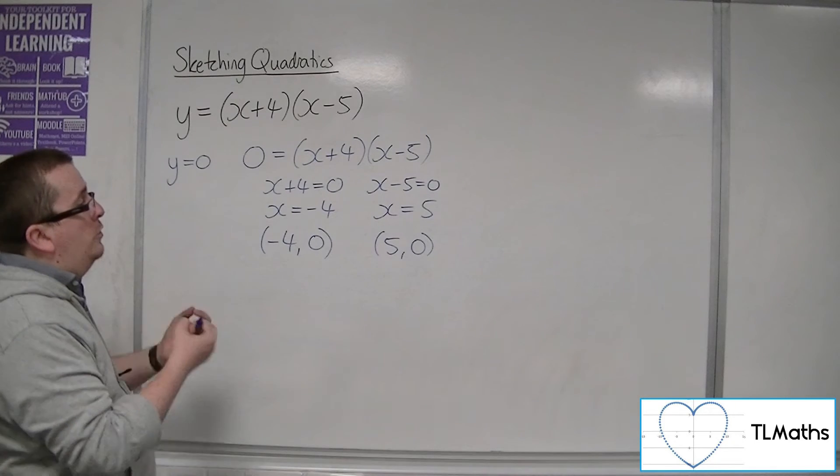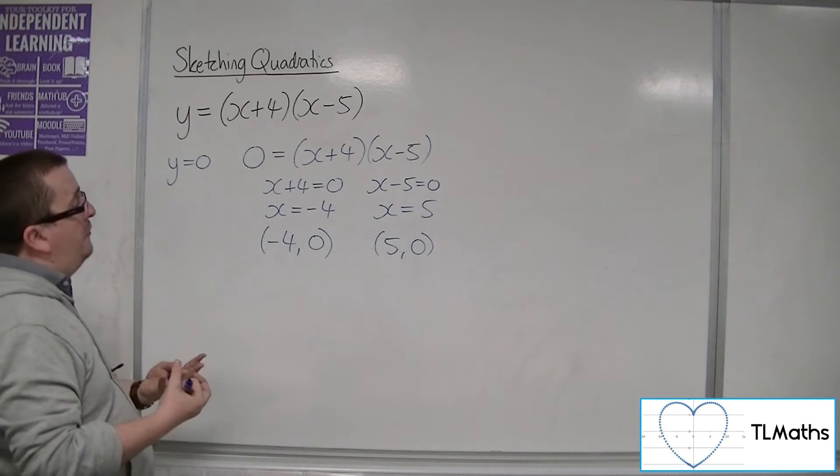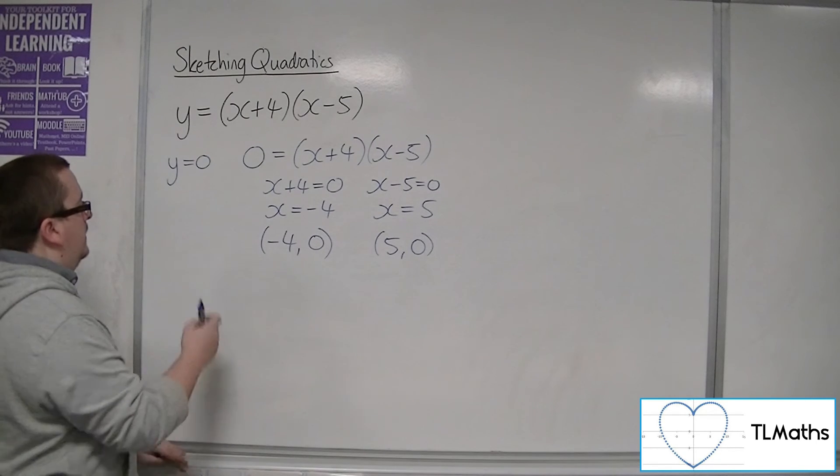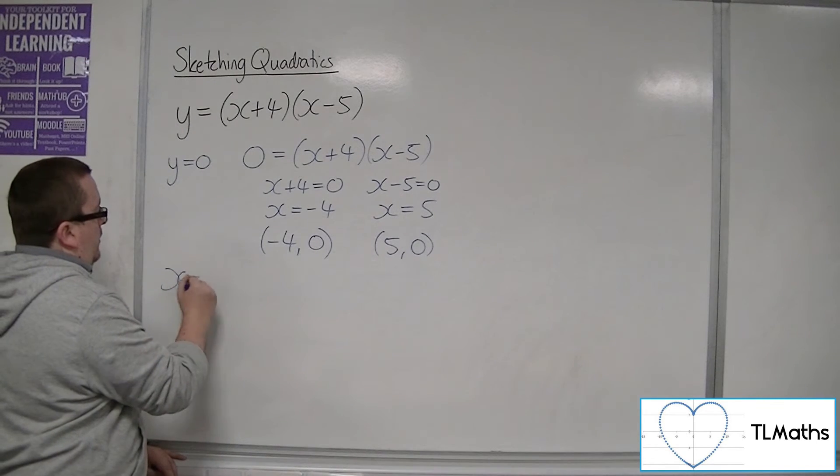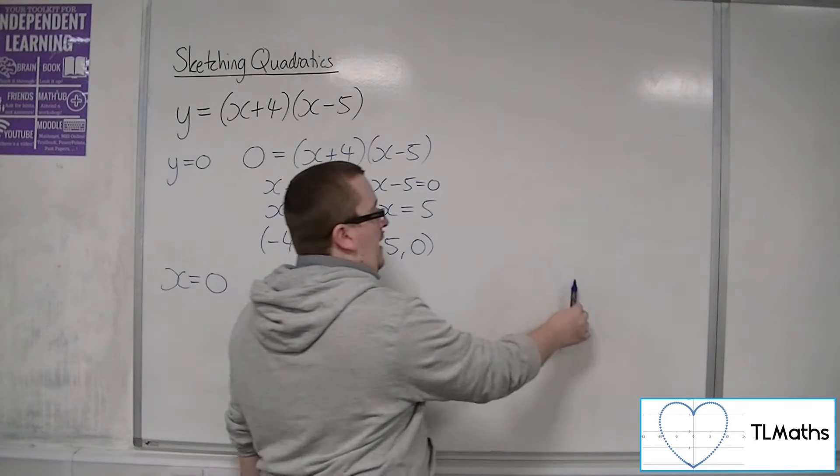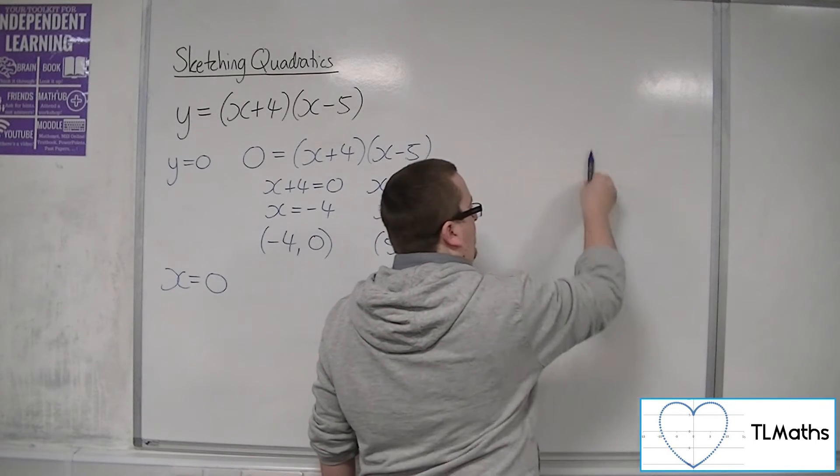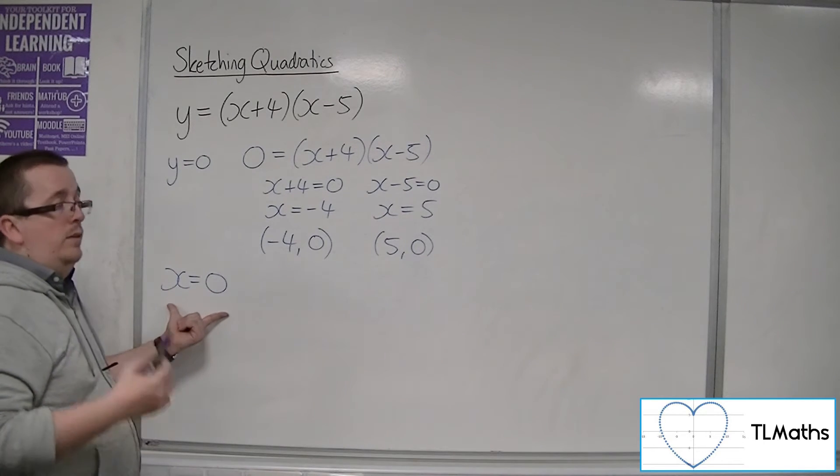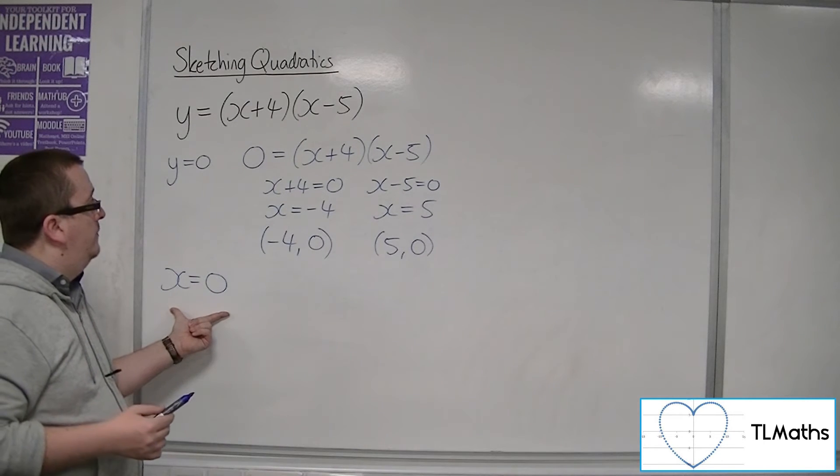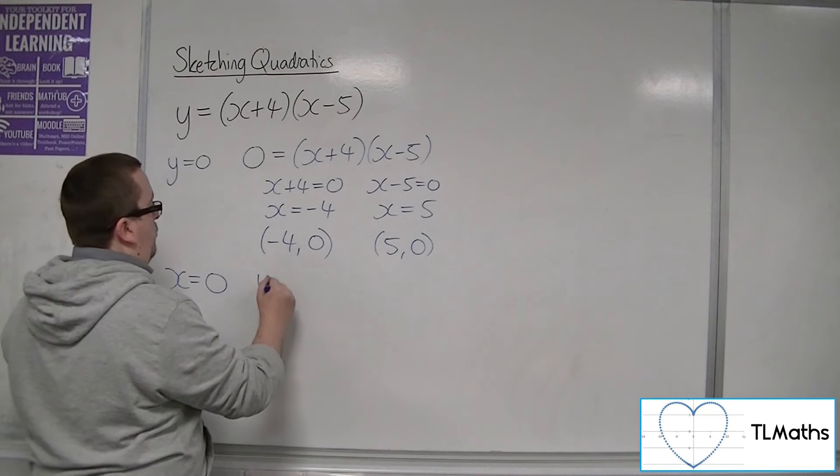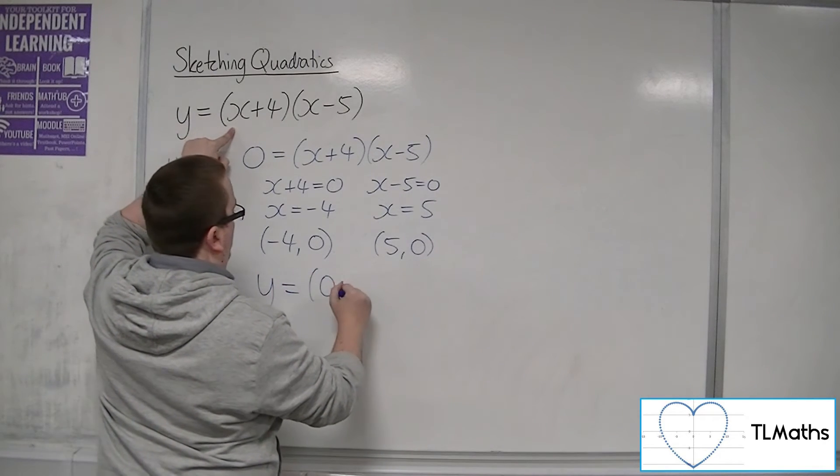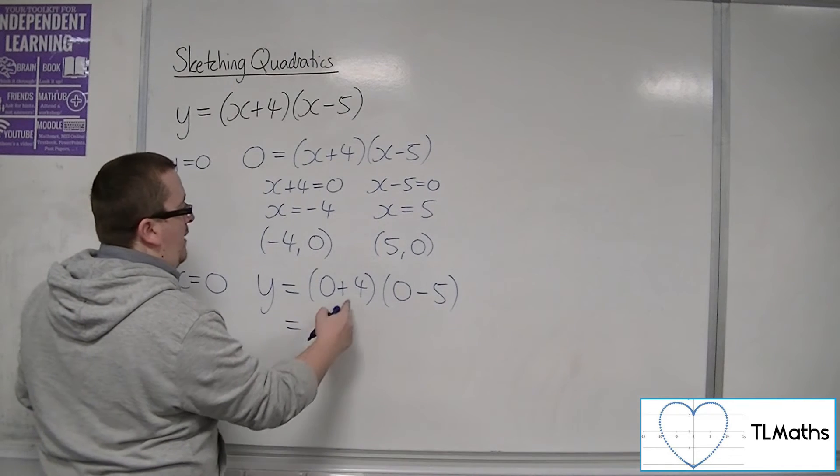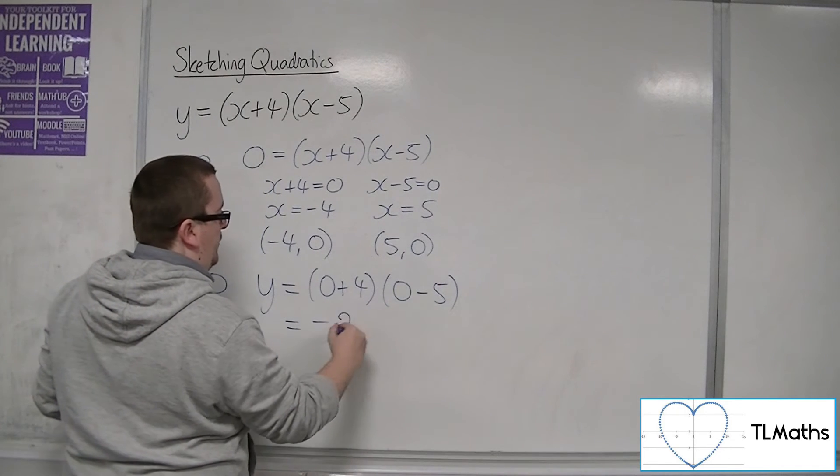Some of this, you could do straight in your head. And when you get confident, you'll be able to identify these very quickly without having to write anything out. So, the y-axis is x equals 0, that horizontal line when x is 0. If I put that into my equation, I will work out where it's crossing the y-axis. So, y equals (0 + 4)(0 - 5). You get 4 times -5, so -20.